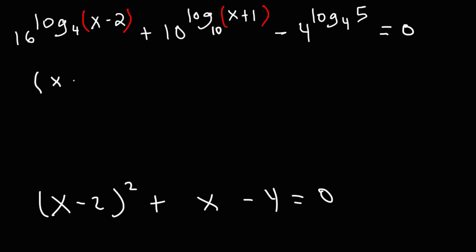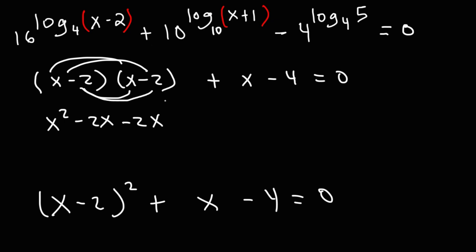Now what we're going to do at this point is we're going to FOIL this expression. x minus 2 squared can be written as x minus 2 times x minus 2. So we have x times x, that's x squared. x times negative 2, negative 2x. Here we have another negative 2x. And then negative 2 times negative 2 is positive 4.